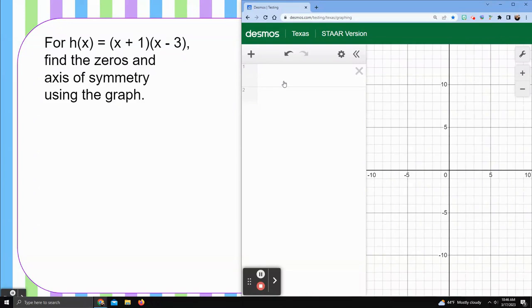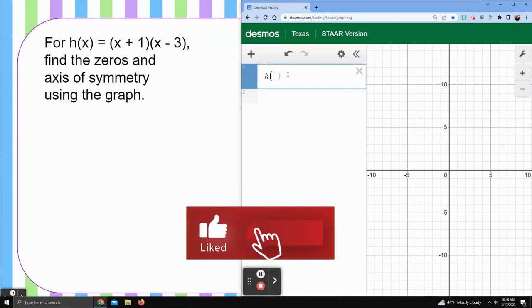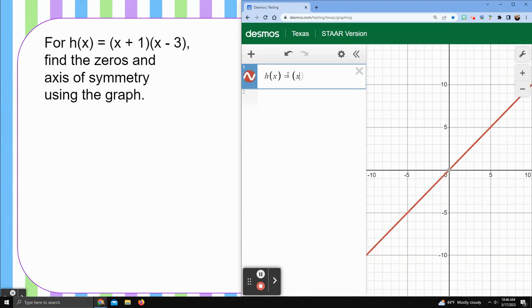Now I'm using the Desmos version of the graphing calculator, which I am linking below for you to take a look to do my graphing so you can see it. Let me type the equation here. I'm going to put the parentheses just like they are. I think it's just easier and I won't make any mistakes.